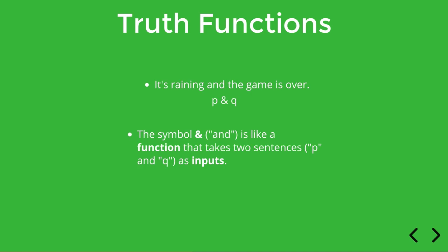Okay, so what kind of output does this function produce? Well, syntactically, AND is used to create a complex sentence out of more simple sentences. But in logic we're primarily interested in relationships between the truth and falsity of sentences. In particular, we really want to understand how the truth of P and Q relates to the truth of P and the truth of Q individually.